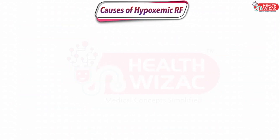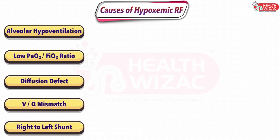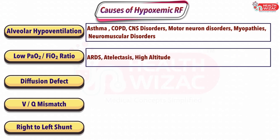Causes of hypoxemic respiratory failure include alveolar hypoventilation, low PaO2/FiO2 ratio, diffusion defects, VQ mismatch, and right-to-left shunt. Alveolar hypoventilation is seen in diseases like asthma, COPD, CNS disorders, motor neuron disorders, myopathies, and neuromuscular disorders. Low PaO2/FiO2 ratio is seen in ARDS, atelectasis, and high altitudes.